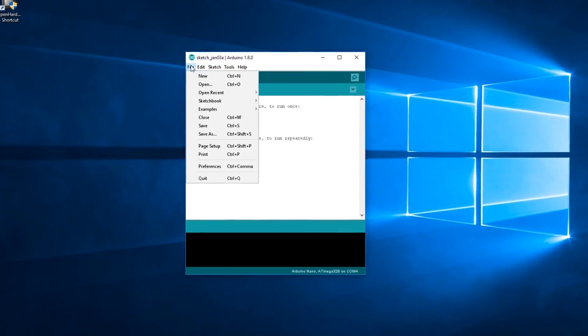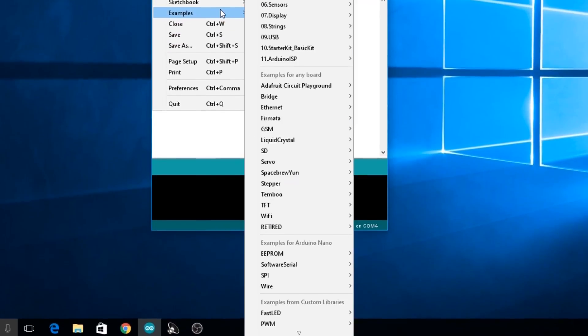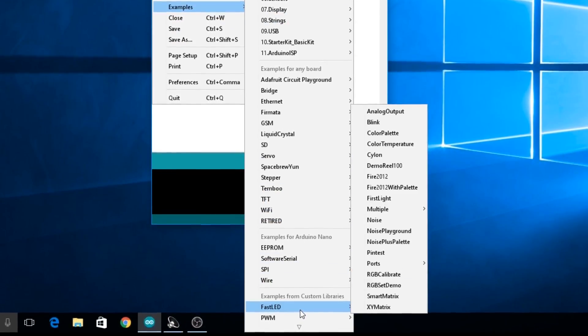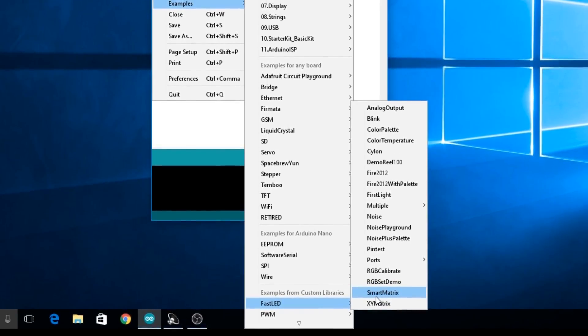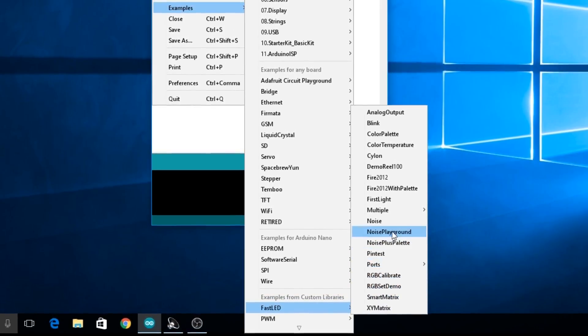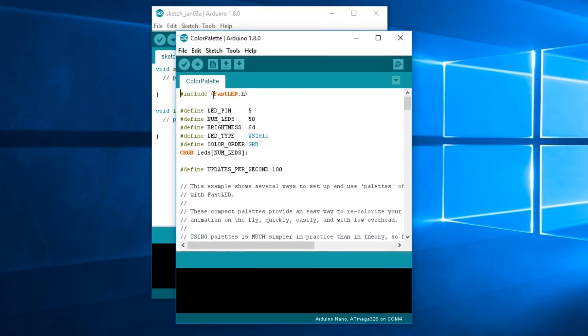For the code, we're going to use a library called Fast LED. So we're going to go down into the examples. Fast LED, which I've already installed from the library manager. I'll show you how to get to that in a second. I'm just going to use this one called Color Palette.